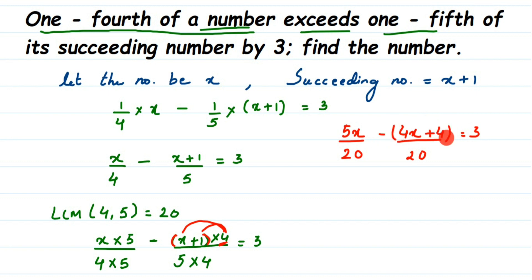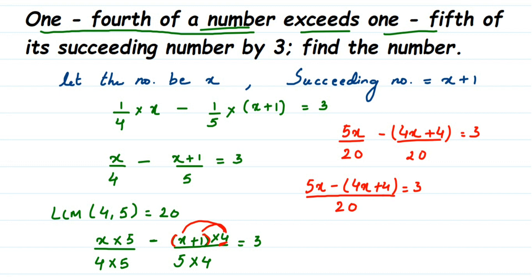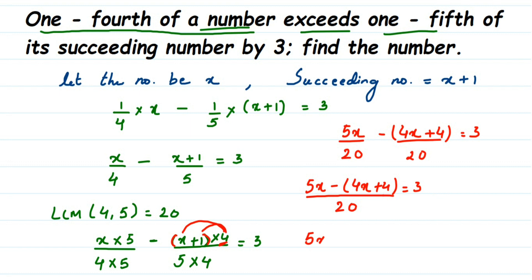Now the denominators are the same so we can subtract. This becomes 5X minus (4X plus 4) all over 20, equals 3. Since we have a single fraction equal to 3, I'm going to transpose the 20 to the other side. 20 is in division, so moving it to the other side makes it multiplication. This gives us 5X minus (4X plus 4) equals 3 into 20.